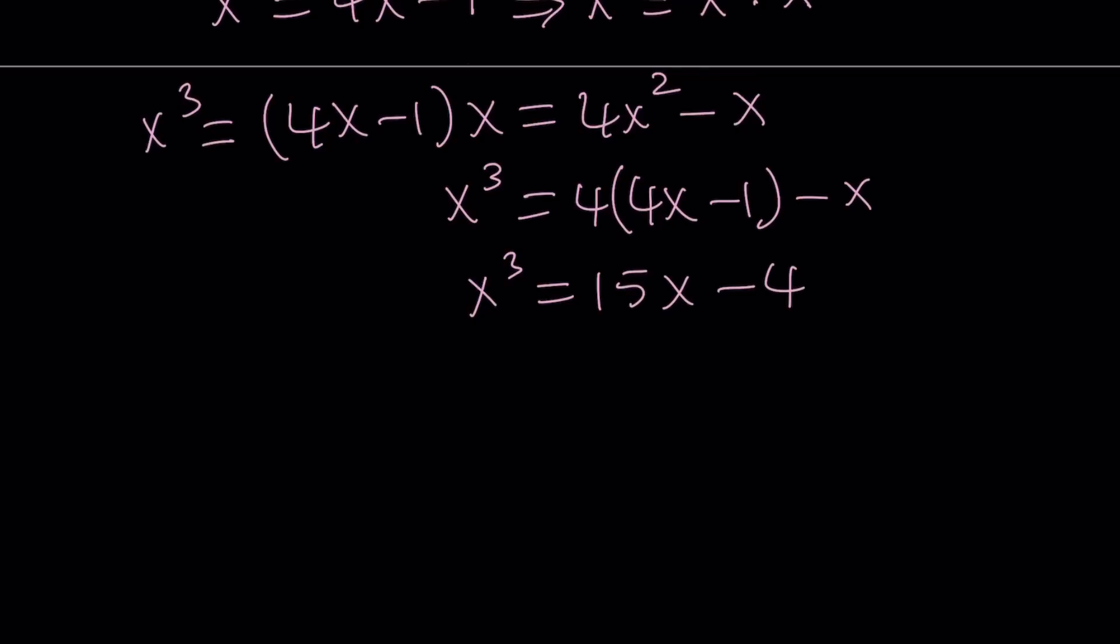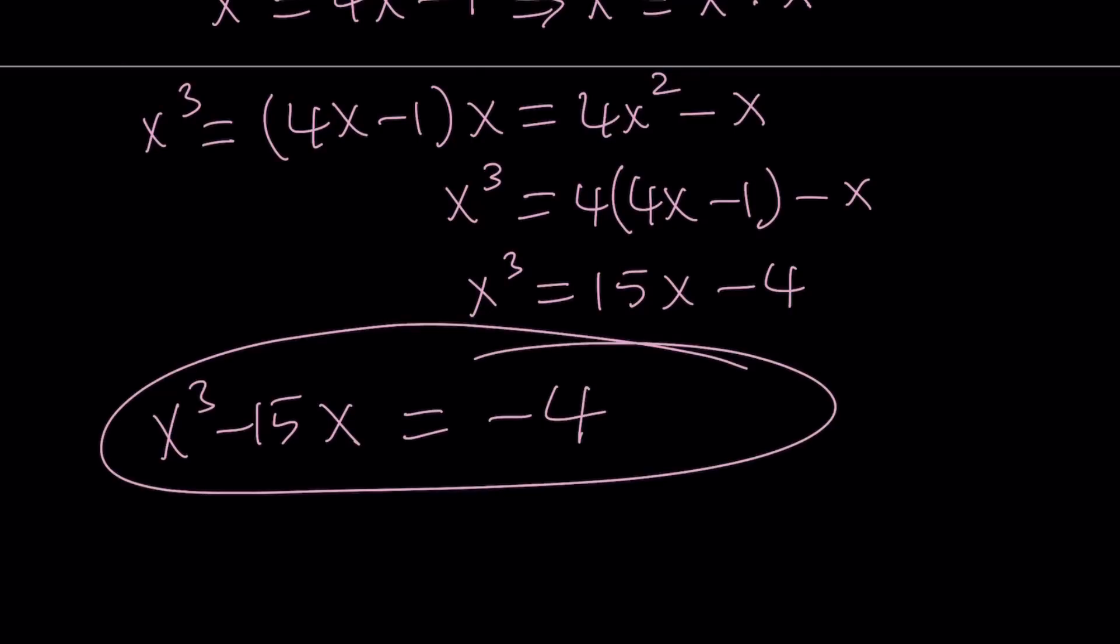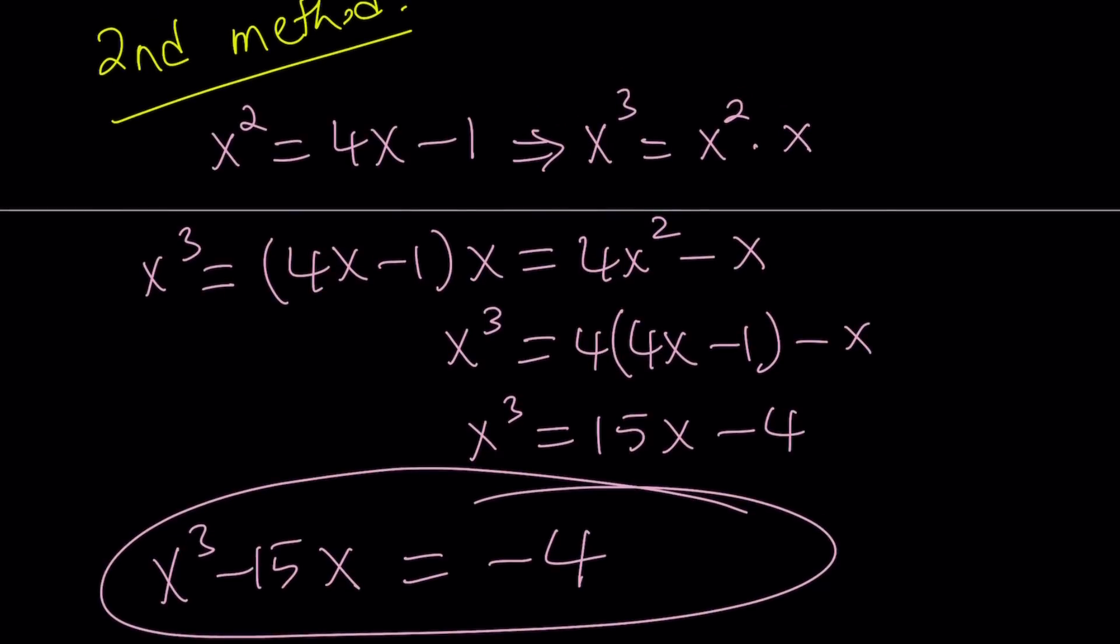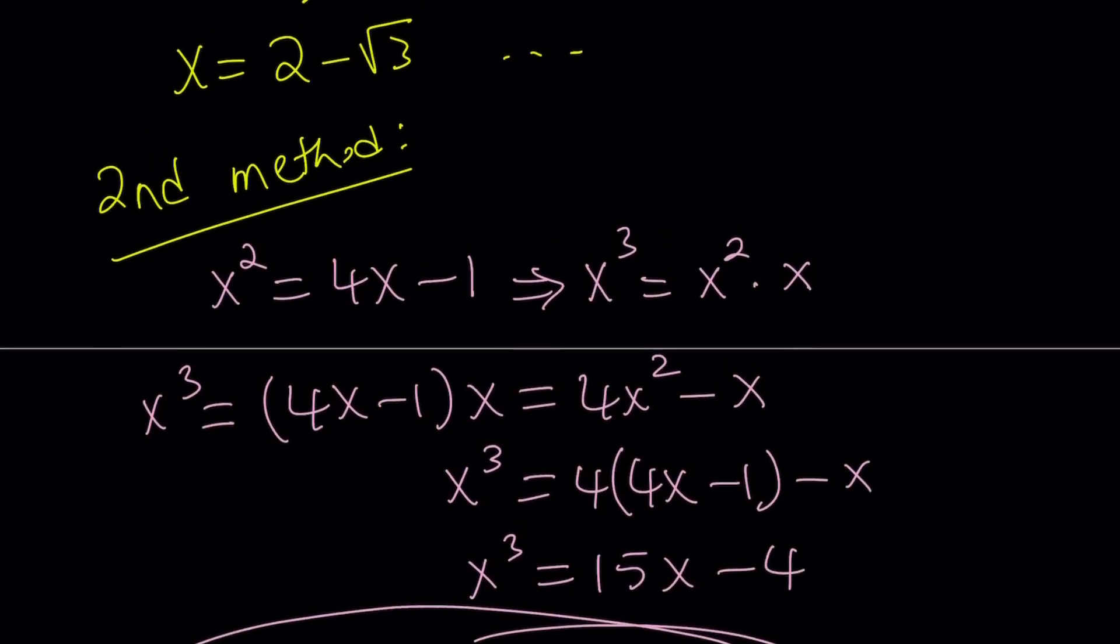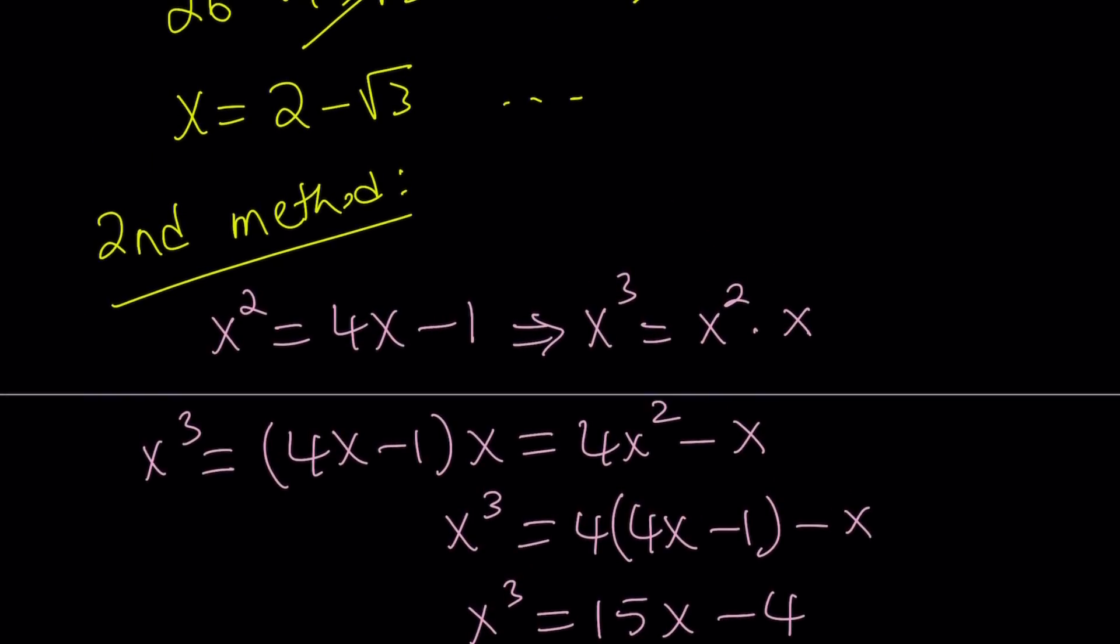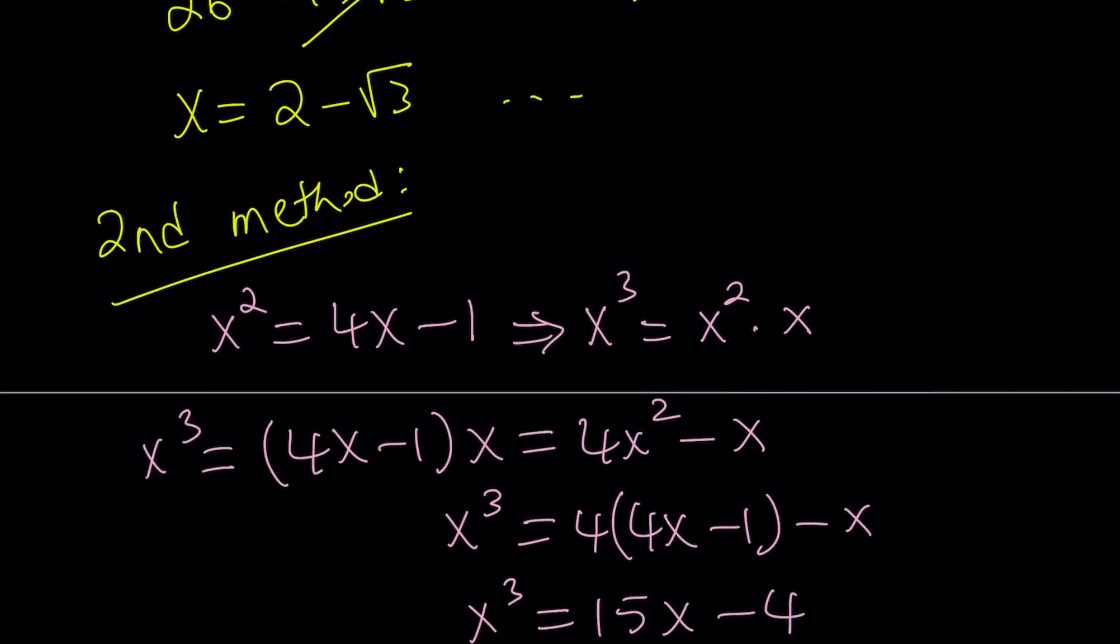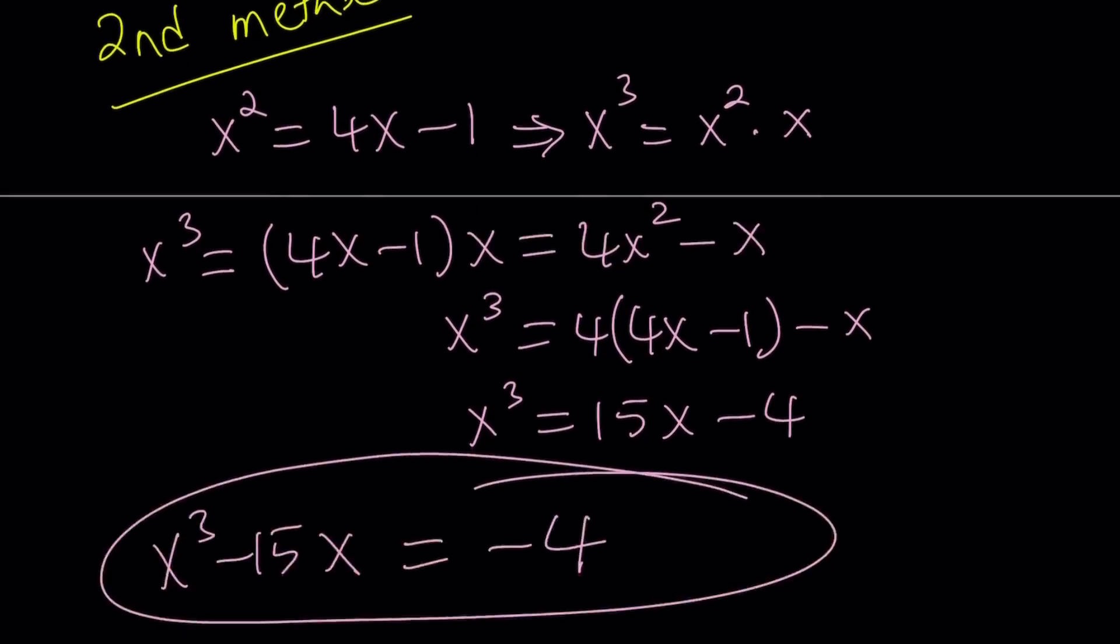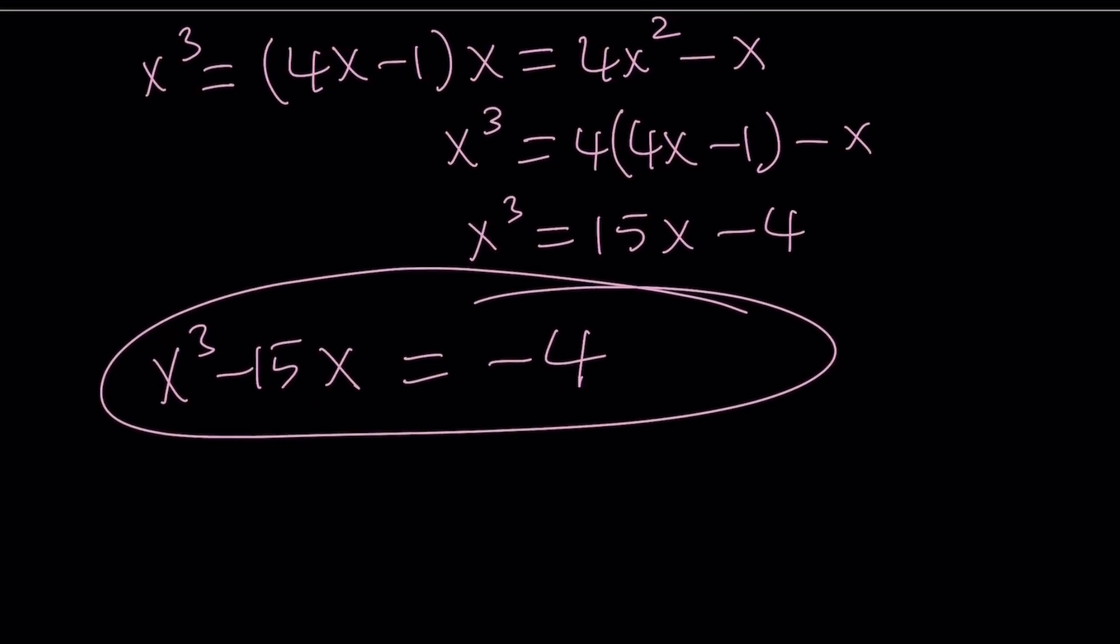But remember, the problem was asking for the value of x cubed minus 15x. And it's not hard to see that it is going to be negative 4 from here. Notice that this doesn't depend on a particular x value. But we kind of solved it in the general sense, which kind of gives you a clue about what would happen if I replaced x with 2 minus root 3 using the first method. All right, you can definitely test it out and see what happens.